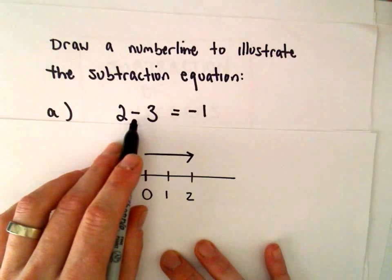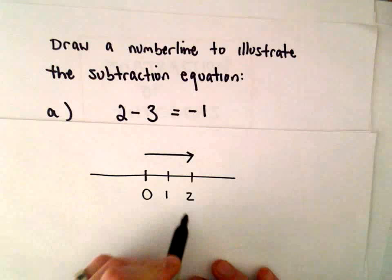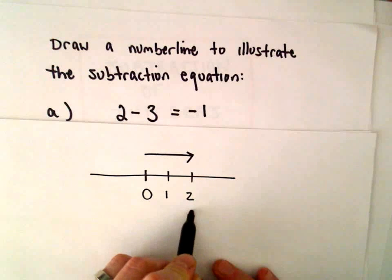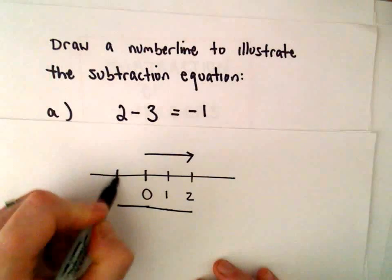And then we're subtracting away positive 3 units. So you can think about, again, subtracting a positive as going to the left. So we'll go left 1, 2, 3 units. And again,